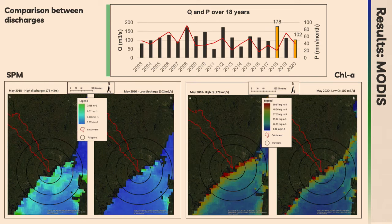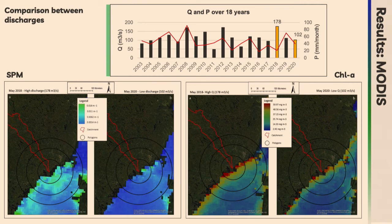This is a visual comparison. In May 2018, for both SPM and CHL there is a clear majority of bright pixels, meaning that concentrations of both were much higher when discharge was higher. May 2020, instead, especially for SPM, the pixels are quite dark, meaning there is not much concentration. However, the problem with this analysis was that I included parts of the coast not really related to the Ore River, so I couldn't be completely sure that concentration was due to the Ore River.